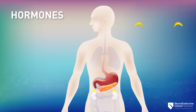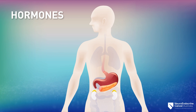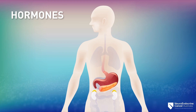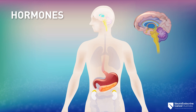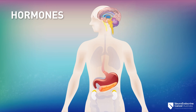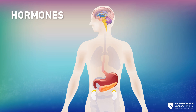Adrenaline is made by neuroendocrine cells of the adrenal gland. It is released during times of stress, like when you feel fear, and increases heart rate and blood pressure. Growth hormone is made in the pituitary gland. It promotes the growth and development of bones and muscles.